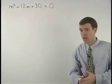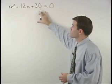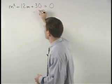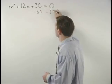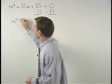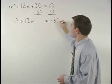In order to create a perfect square trinomial on the left side, we would first move this plus 30 over to the right by subtracting 30 from both sides of the equation, and we have m squared plus 12m equals negative 30.